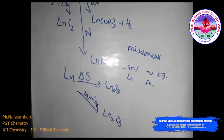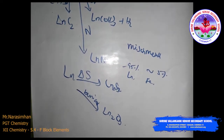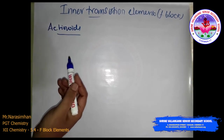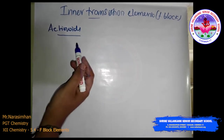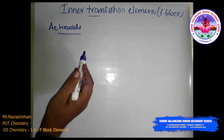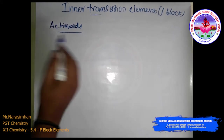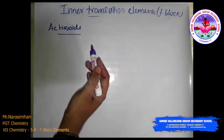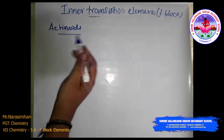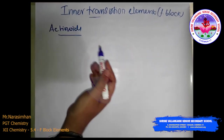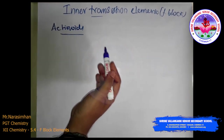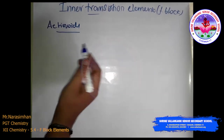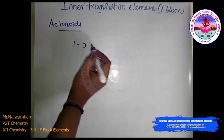Next, we discuss actinoids. The chemistry of the actinoids is complicated mostly because they are radioactive elements. Their earlier members have relatively long half-lives, while later ones have half-life values ranging from one day to three minutes.